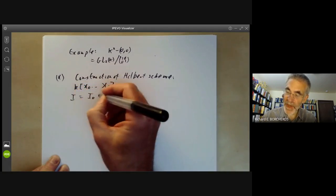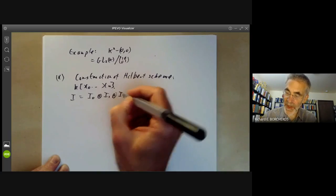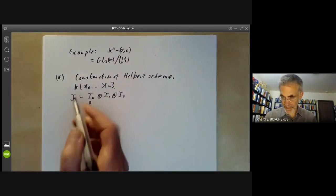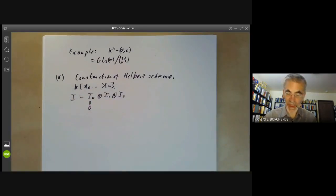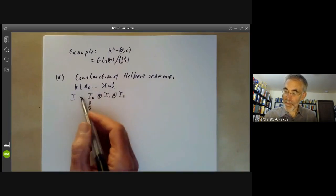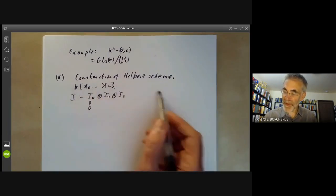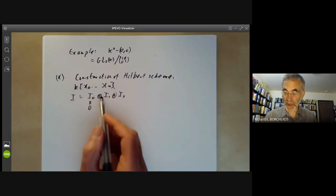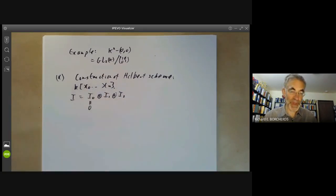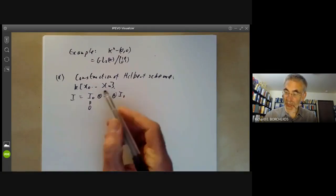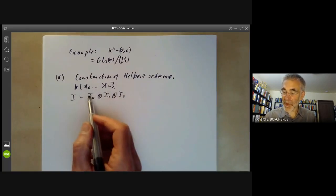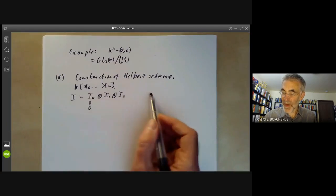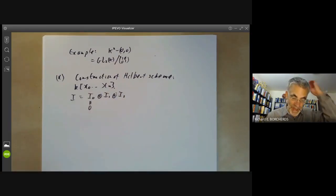and you look at graded ideals of this ring. So the graded ideal is going to be I0 plus I1 plus I2. Well, I0 will, of course, just be zero. Otherwise, the closed subset you get is not terribly interesting. And you want to classify sub-schemes that correspond roughly to graded ideals of this ring here. So what you really want to do is to classify graded ideals of this ring. And in particular, you'd like to show that graded ideals correspond to points of some projective scheme.